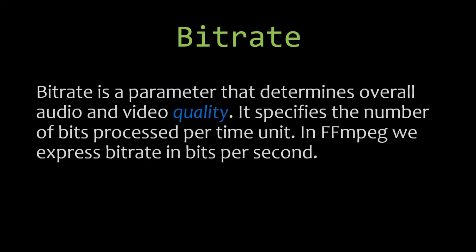In this tutorial we are going to see what is bitrate, the types of bitrate, and we will also see hands-on examples for these three types. Bitrate is a parameter that determines overall audio and video quality. It specifies the number of bits processed per time unit, and in ffmpeg we express bitrate in bits per second. Generally, higher the bitrate, higher the quality of multimedia content.